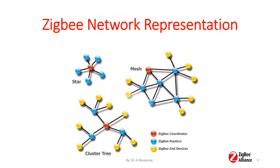The topologies followed in the Zigbee network are represented here. We are seeing three types of topologies: the first one is Star Topology, the next one is Mesh Topology, and the third one is Cluster Tree. In these nodes, the red color indicates the Zigbee coordinator nodes, the blue color nodes indicate the Zigbee routers, and the yellow color nodes represent the Zigbee end devices.